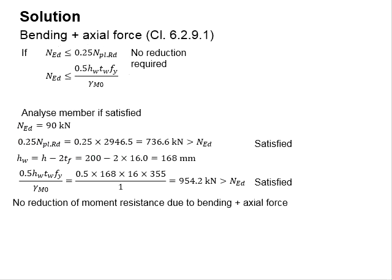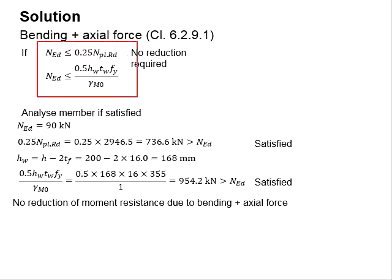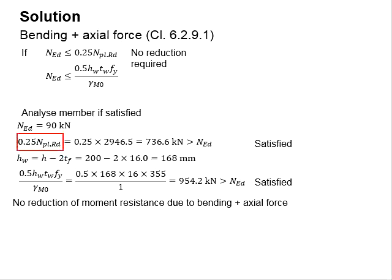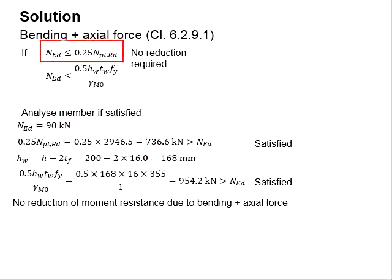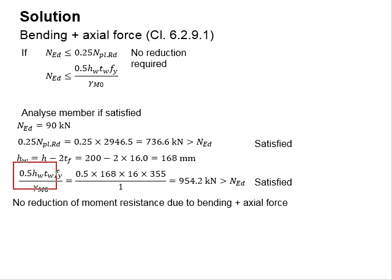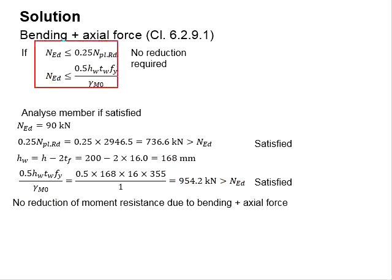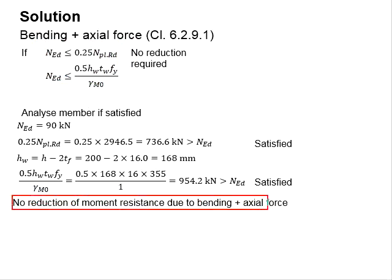Next, check for combined bending and axial force according to clause 6.2.9.1. First, identify whether there will be any reductions due to the combined effect by checking against two criteria. The shear load is found to be 90 kN, and 25% of the shear capacity is 736.6 kN, which is greater than the shear load — the first criterion is satisfied. You need both criteria satisfied to omit the reduction effects. Checking the second criterion, 50% of the web area times yield strength is also found to be greater than the load. Both criteria are satisfied, therefore there will be no reduction in moment resistance.